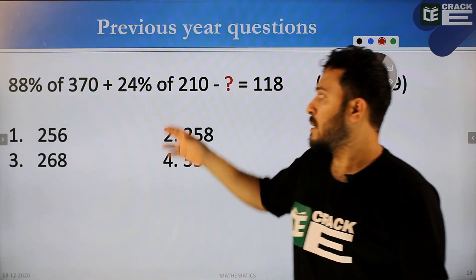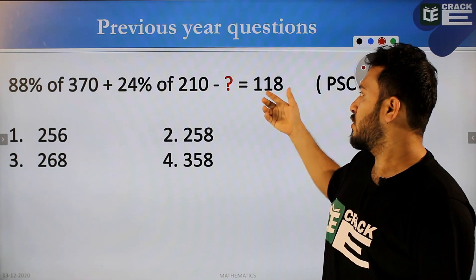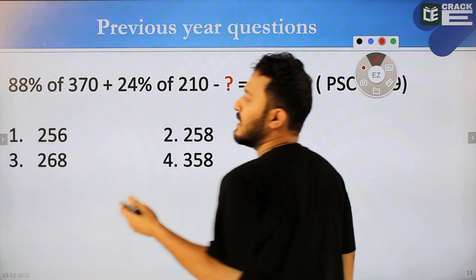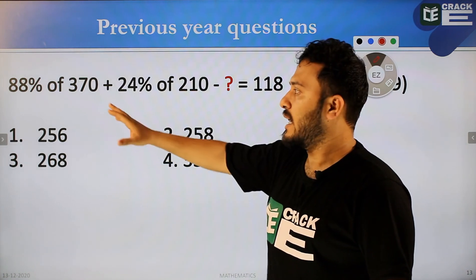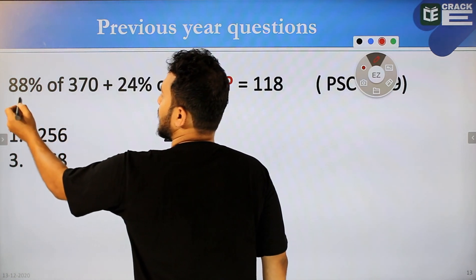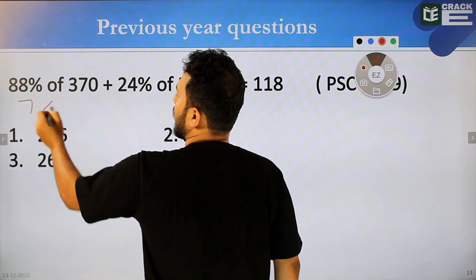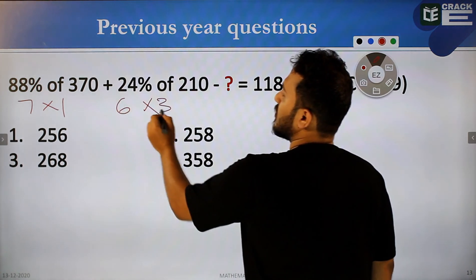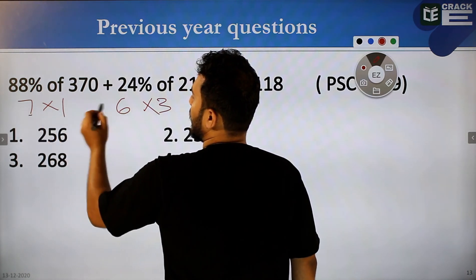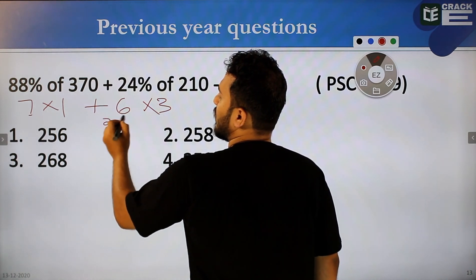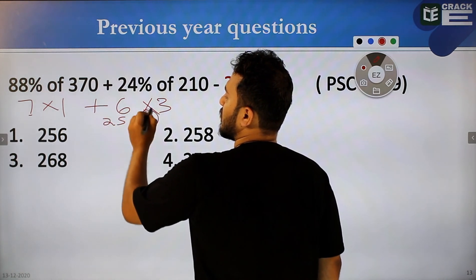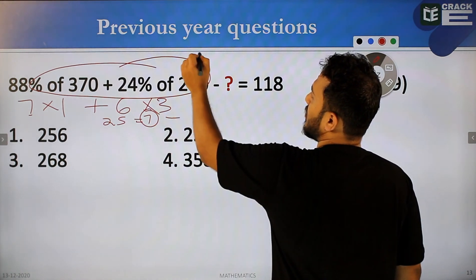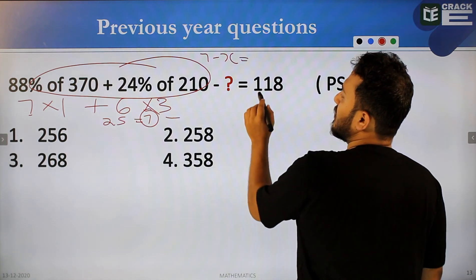88% of 360 plus 24% of 210 minus a given value equals 118. 88 into 370 divided by 100. Digit sum of 88: 8 plus 8 is 16, digit sum is 7. Digit sum of 370: 3 plus 7 is 10, digit sum is 1. Digit sum of 24 is 6. Digit sum of 210 is 3. 7 into 1 plus 6 into 3 is 18 plus... digit sum of 25 is 7. This is the LHS digit sum.